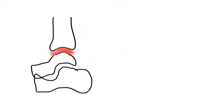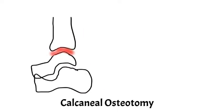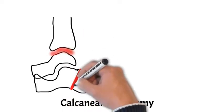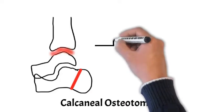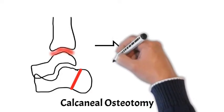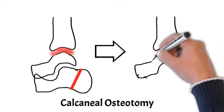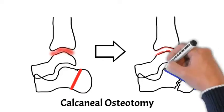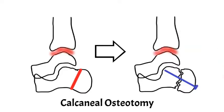Another operation done in the study, which is a hindfoot operation, is known as a calcaneal osteotomy, where the heel is basically broken and moved into a different position and held with a screw. This is usually done for patients with either a high arch or a very low arch, such as a flat foot. These are the types of operations included in the study.